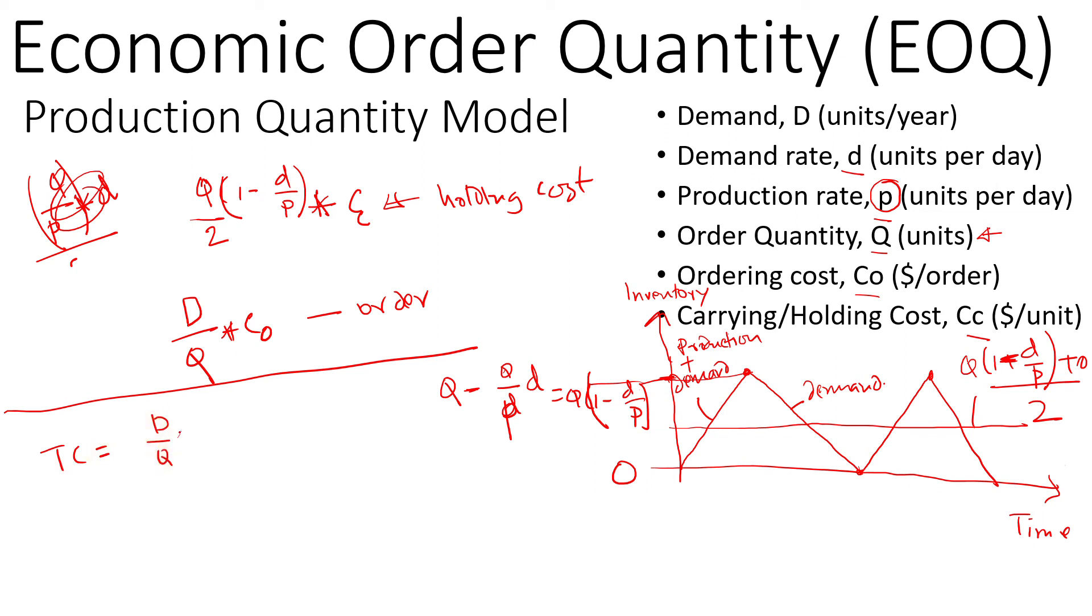If we add these two, the total cost will be (D/Q)Co plus (Q·Cc)/2·(1 minus d/p).